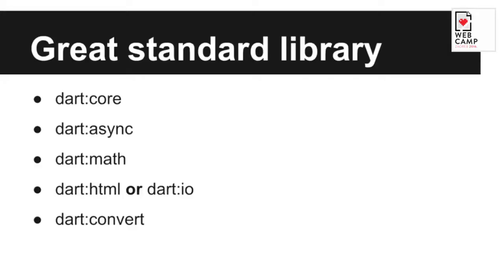Dart has a great standard library. It comes with async support, math, convert utilities, and JSON handling already built in. For client-side development, there's Dart HTML to interact with the DOM and Dart JS to interact with other JavaScript libraries — and you can transpile your Dart code to JavaScript. On the server side, Dart works like Node.js, and you get Dart IO for all your file system access and related tasks.